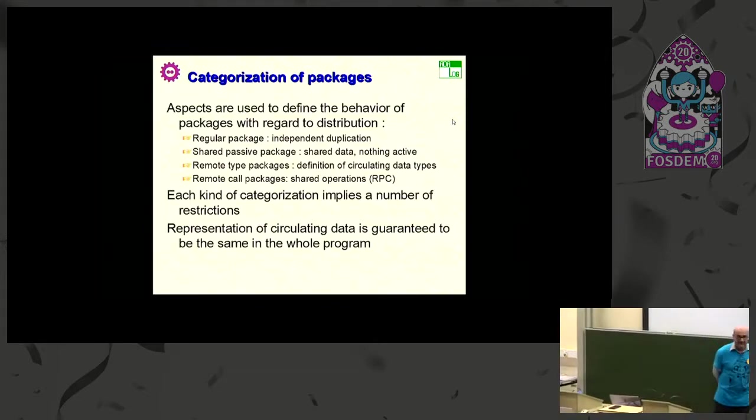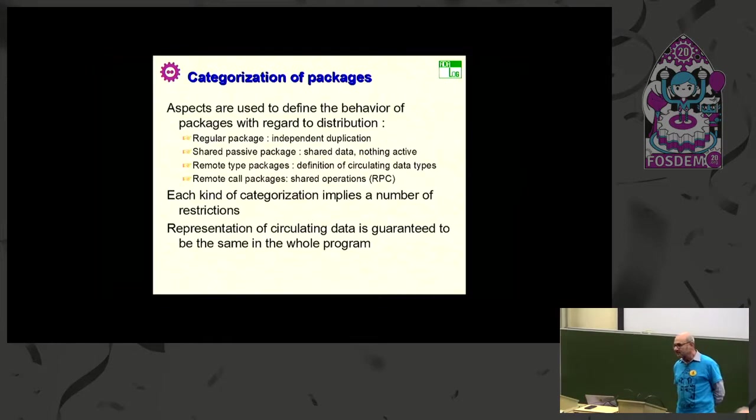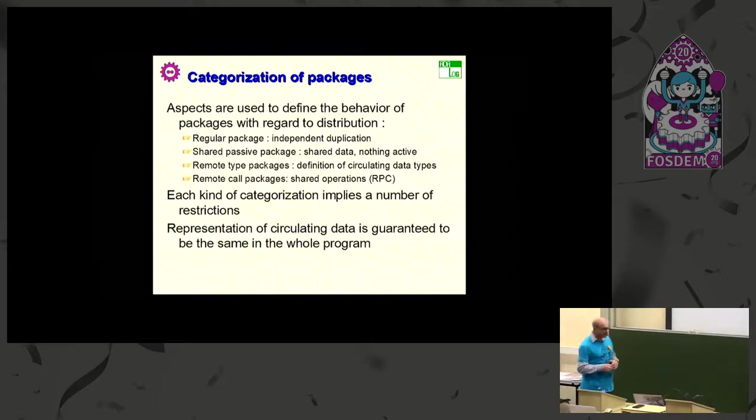So, of course, not all data can circulate on a network. A task, a pointer, would be hard to exchange. That would not be possible, or it would be meaningless. So, you need to have some restrictions. The idea is you have a number of aspects that define how a package will behave regarding distribution. I won't go into too many details, but just to mention, you have a regular package that has no categorization. These are called categorization aspects. Without categorization, the packages are duplicated, so they are independent. If you have a variable in a package in a partition, that variable is not related to another, to the same variable, with the same name, in another partition.